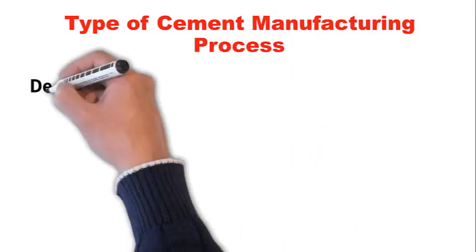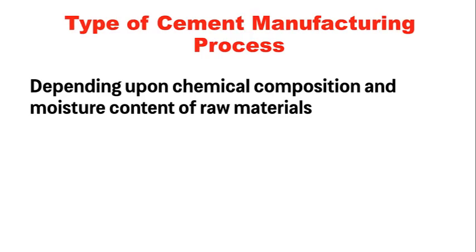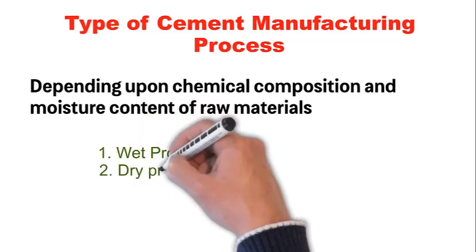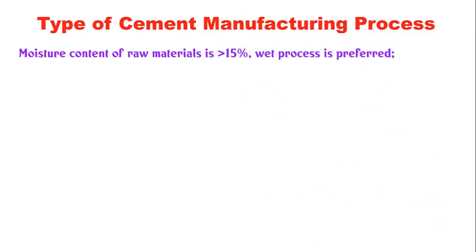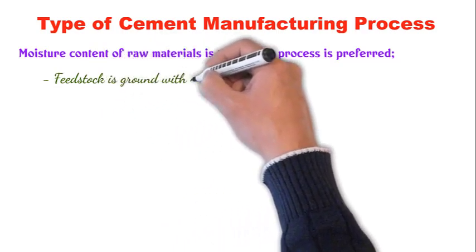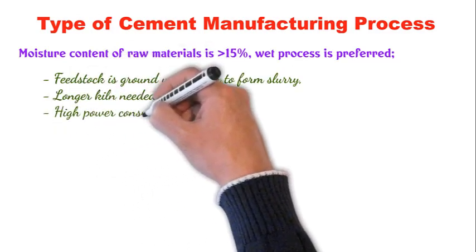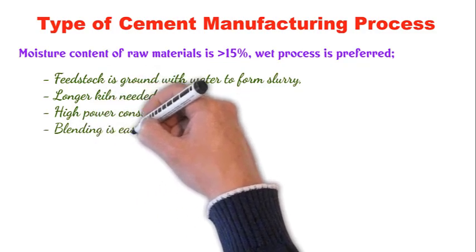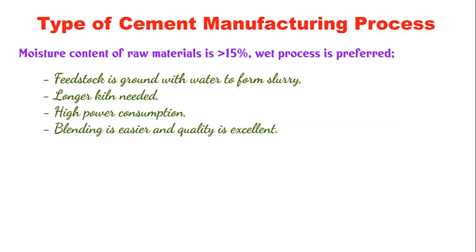The type of cement manufacturing process — wet process or dry process — is decided depending on the chemical composition and moisture content of the raw material. If the raw material has more than 15% moisture content, the wet process is preferred. In the wet process, the raw material is ground along with water to form a slurry, which is fed into the kiln. The kiln is very long in size and requires higher power due to the high moisture content. However, blending is easier and all raw materials are mixed homogeneously, resulting in very good quality clinker.